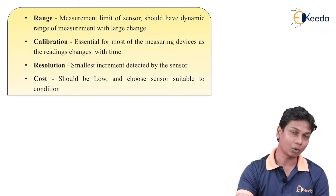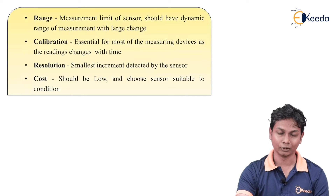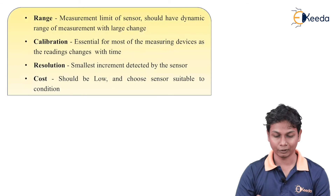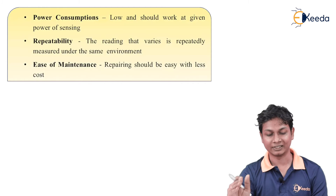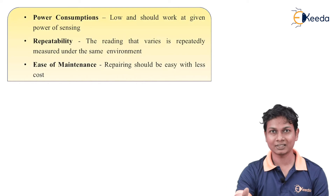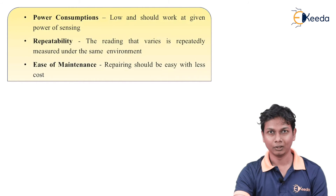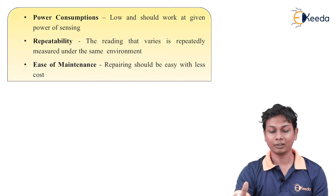The next part is cost. The cost should ideally be low, and we should choose a sensor suitable for the condition. For a chosen suitable condition, the cost should ideally be low. Regarding power consumption — it should be low and the sensor should work within the given power supply. The sensor can work with external power or with its own internal power. So there are two types of power, and power consumption should ideally be low.